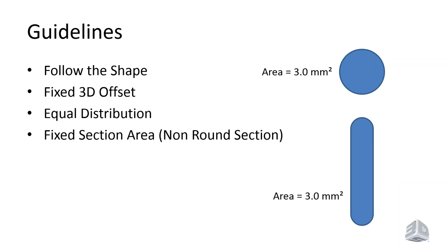We need a fixed section area through the waterline. Thinking about a round hole — it has a cross section with an area, and that area needs to stay constant throughout the length of the waterline as much as possible. If we squeeze the waterline between mold features, we still want the same fixed offset. If we narrow it, we also need to elongate it so that cross-sectional area stays the same, maintaining the same water flow throughout. If the area starts to reduce, that slows down our water flow.